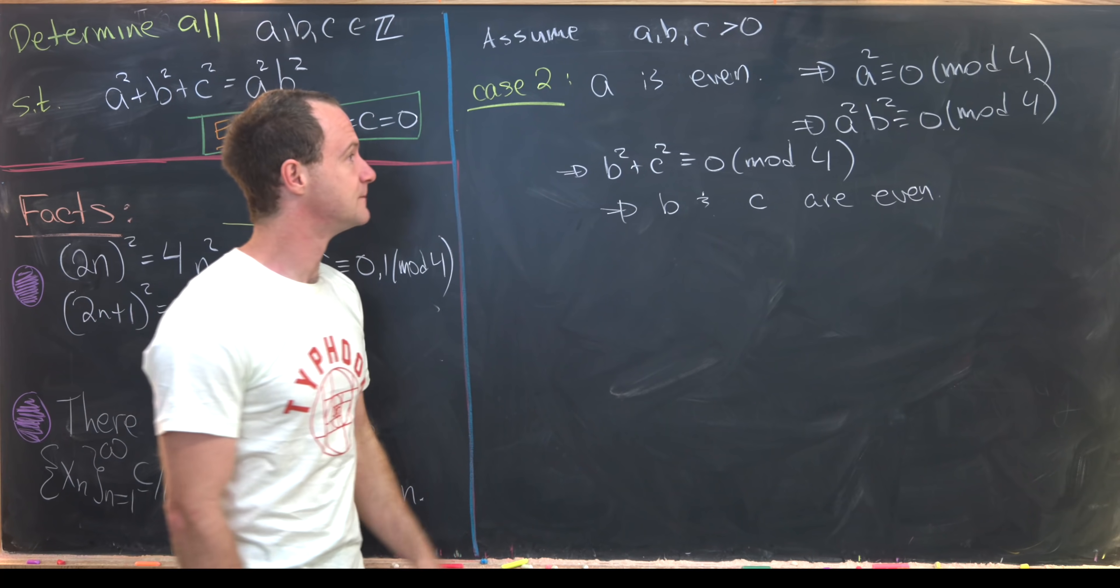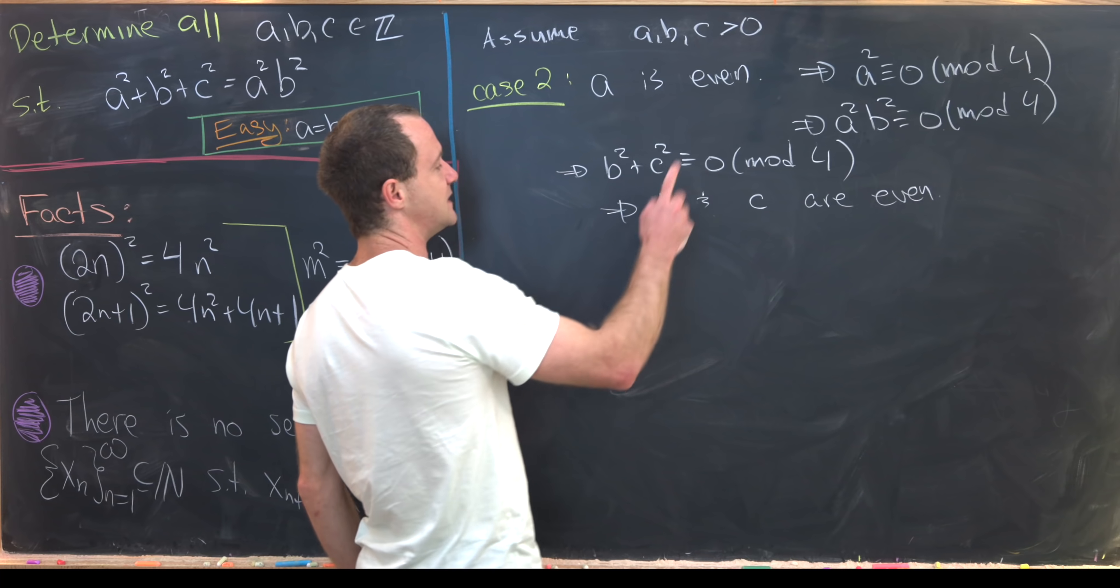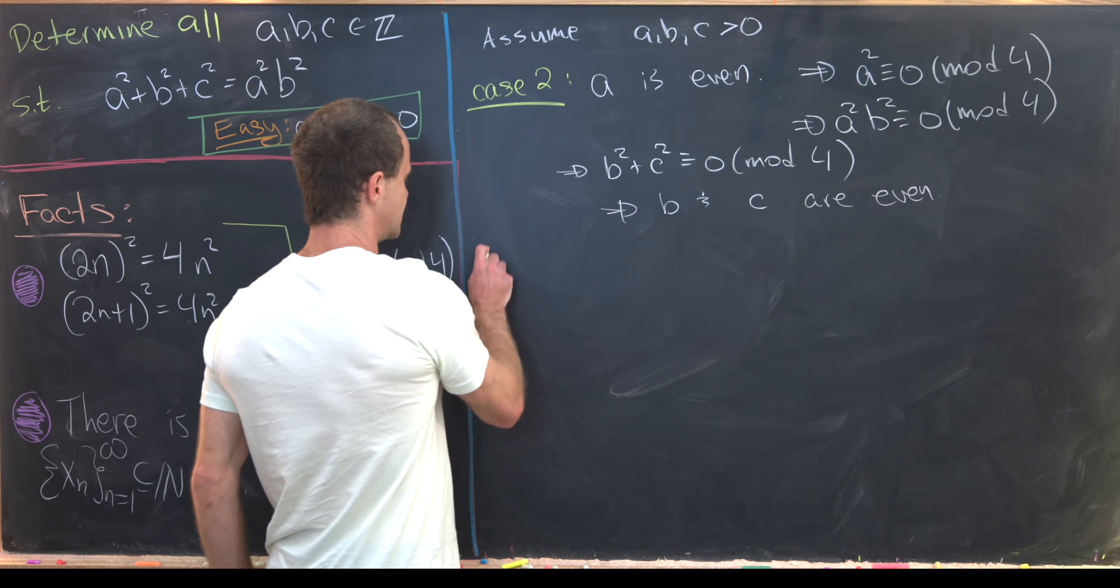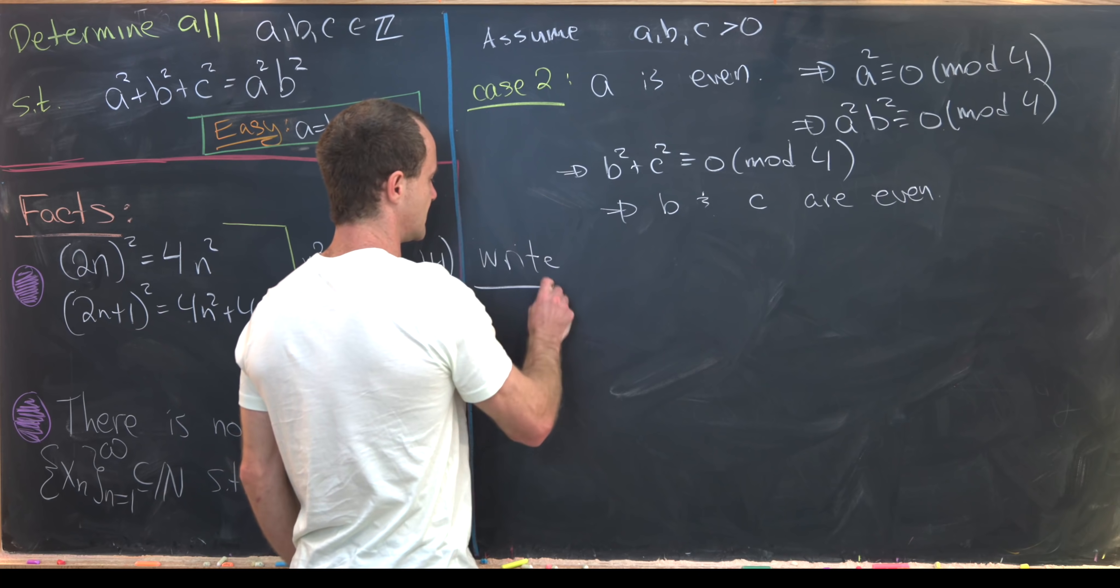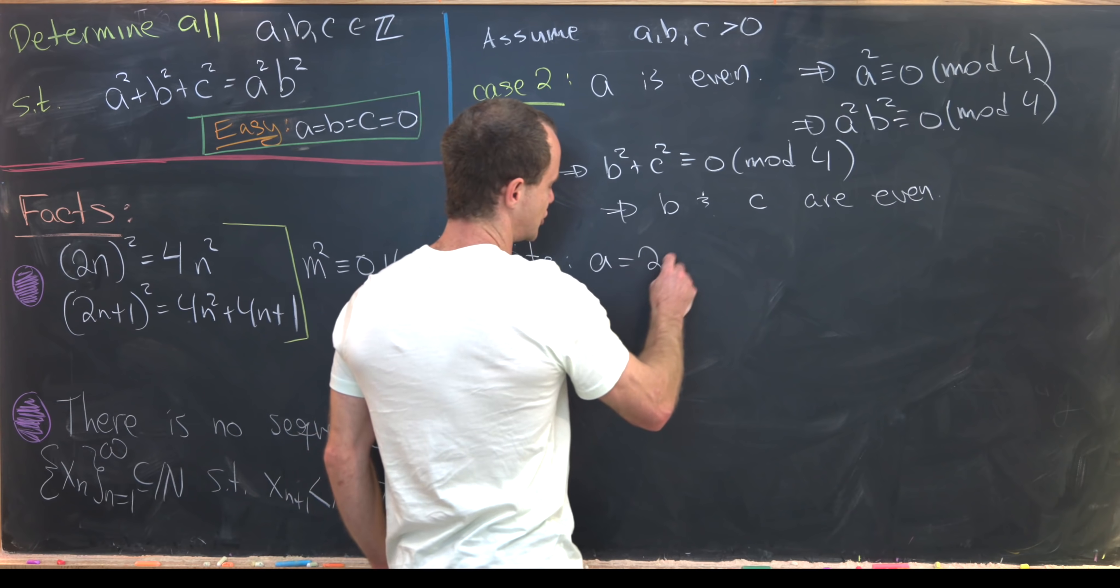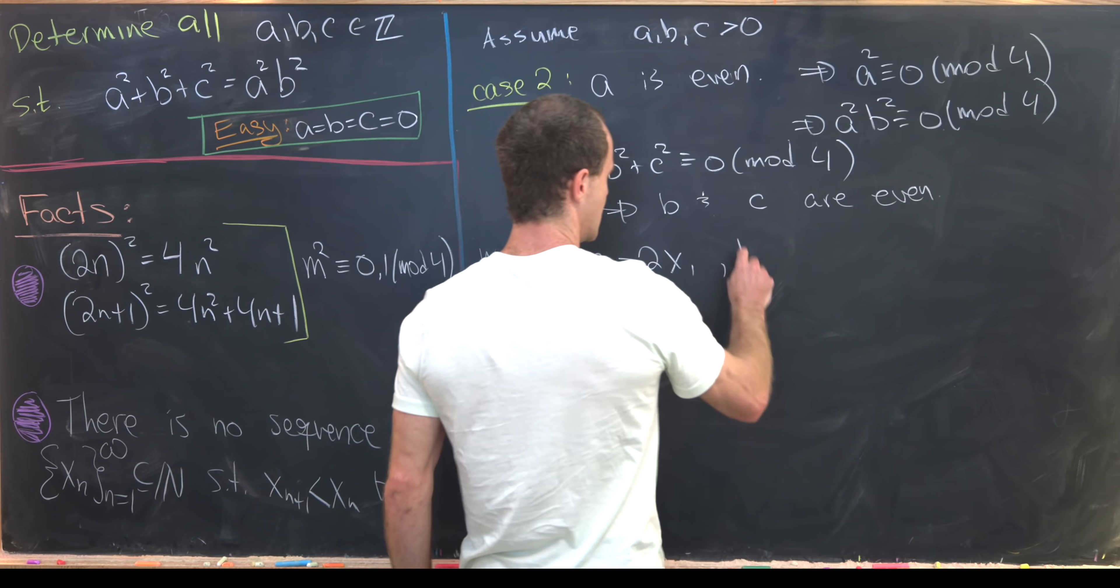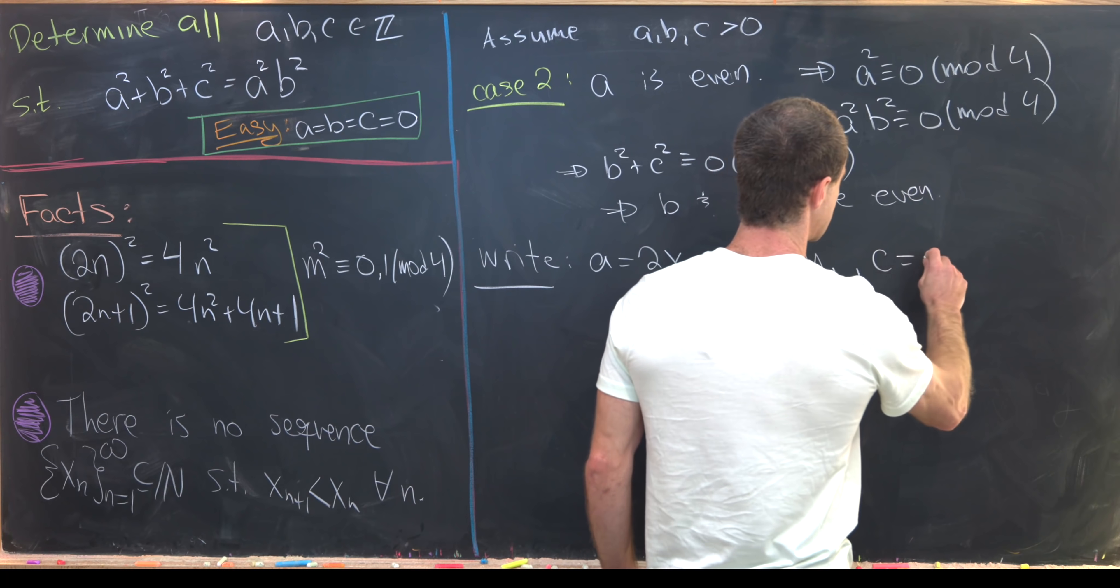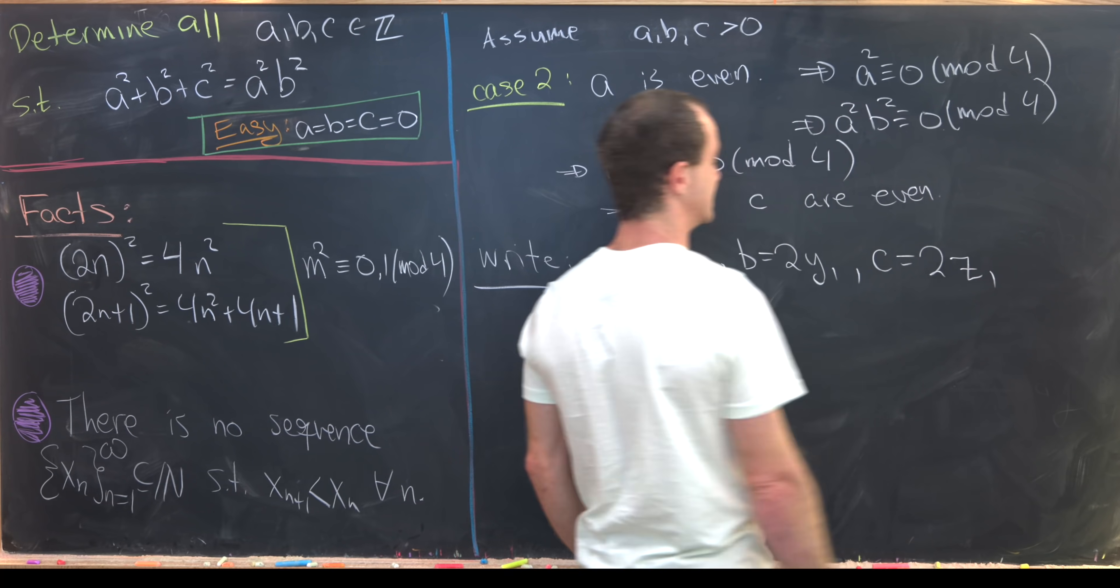So that's good to keep in mind. So we know that a is even, b is even, and c is even. That means we can write the following: We'll write a = 2x₁, b = 2y₁, and c = 2z₁.